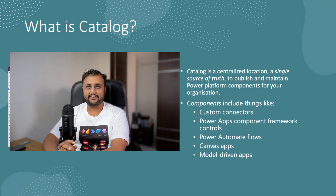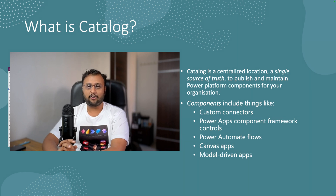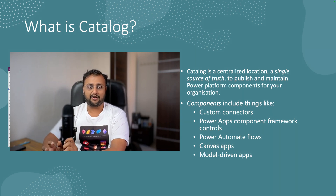The first question that arises in our mind is: what is Catalog? In simple words, it is a centralized location or a single source of truth to publish and maintain the Power Platform components of your organization. Those components can be anything like Custom Connectors, Power Apps Component Framework, Power Automate Flows, Canvas Apps, or Model-Driven Apps.